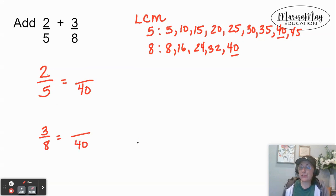So to convert two fifths, we'll ask ourselves five times what would give me 40? So that's five times eight. If I multiply the bottom by eight, I have to multiply the top by eight. So two times eight gives me 16.